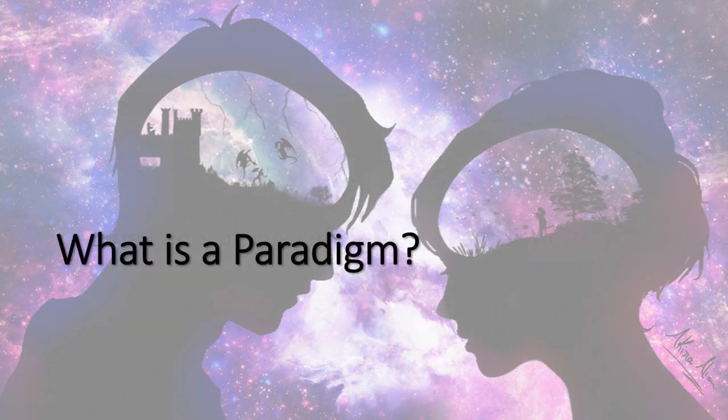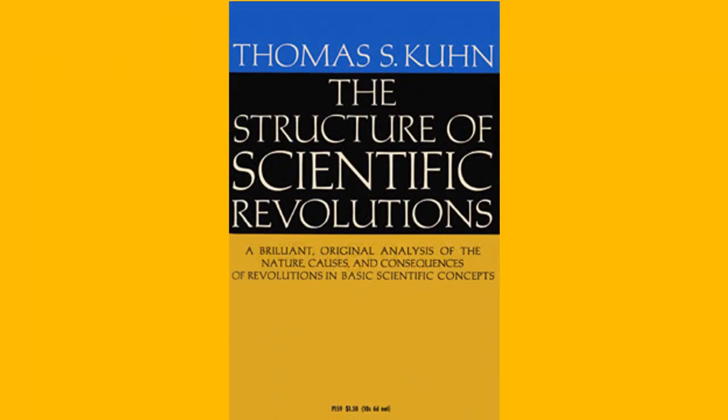To start off this lecture, I'd like to define what a paradigm is, since we'll be using that concept throughout the course. The word paradigm was given great importance in the discussion of the history of ideas with the publication of Thomas Kuhn's book, The Structure of Scientific Revolutions. And I think the best way to explain a paradigm would be to give you an example of how scientific revolutions occur.